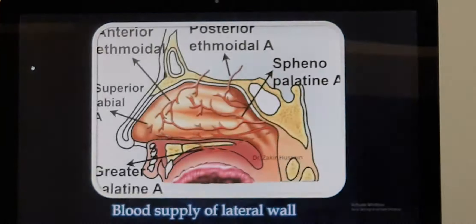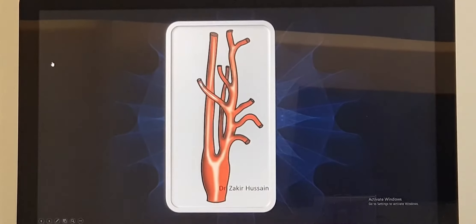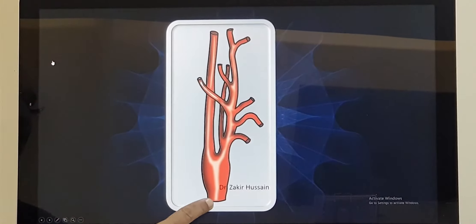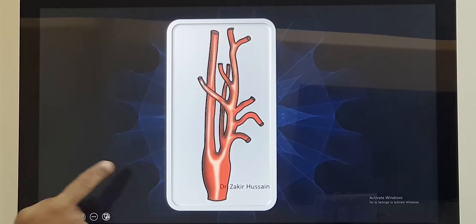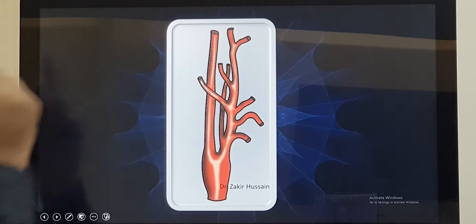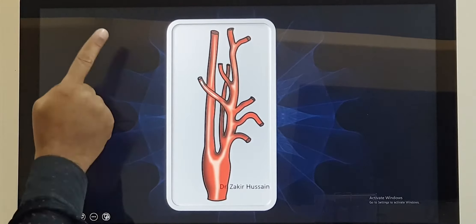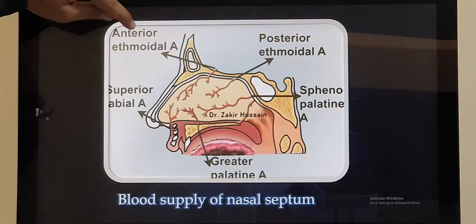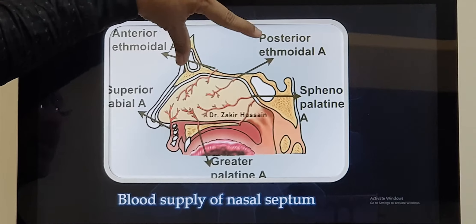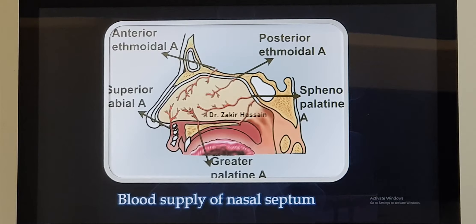Now the main artery which starts from the heart, in the neck when it reaches the neck it divides into two. The internal carotid, which does not have any branches in the neck, goes inside the brain and reaches the orbit and finally supplies the upper part of the nose. As you see in this picture, the anterior ethmoidal and posterior ethmoidal. These are the terminal branches of the internal carotid artery.